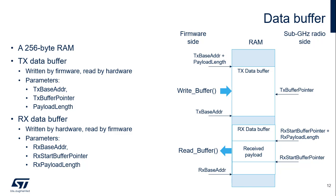The receive buffer is written by hardware and read by firmware. The start of the receive buffer is defined by the receive base address; the hardware uses the receive start buffer pointer to begin reading the data. Data is read until the length of the buffer as defined by the received payload length. Note that if the amount of received data exceeds the received buffer length, other data in the RAM are overwritten.